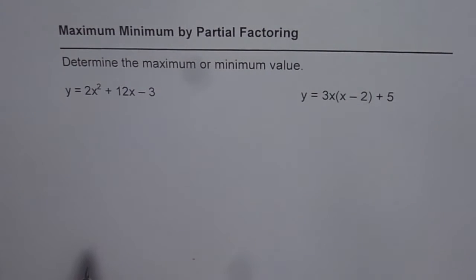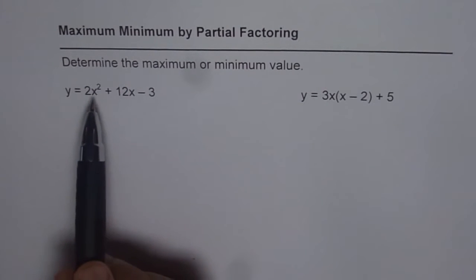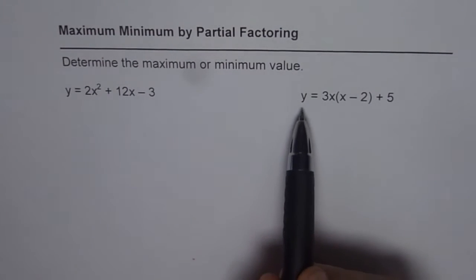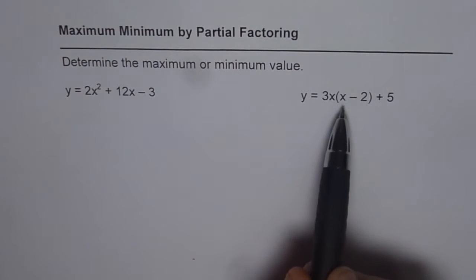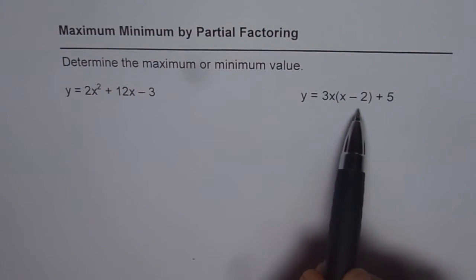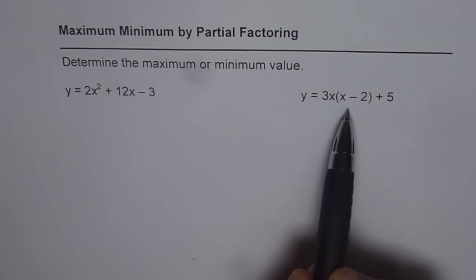We are given two different functions, y equals 2x squared plus 12x minus 3 and y equals 3x times x minus 2 plus 5. This is partial factored form and we are going to actually explore this form.